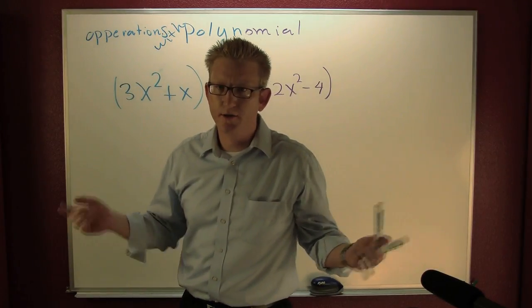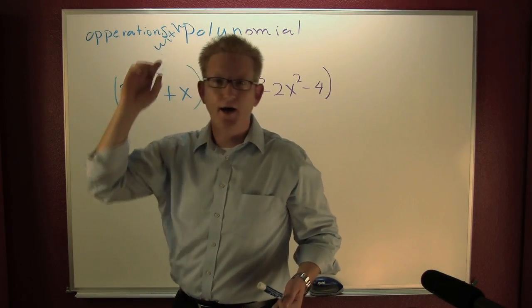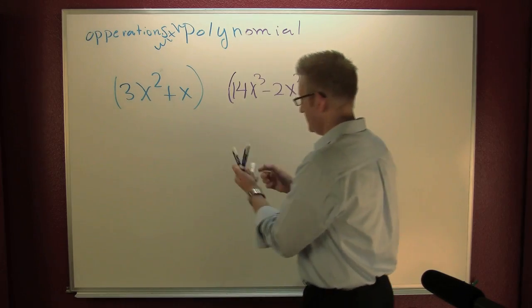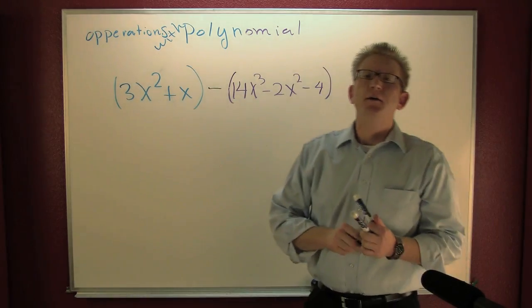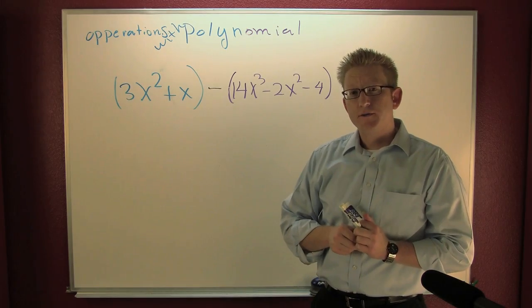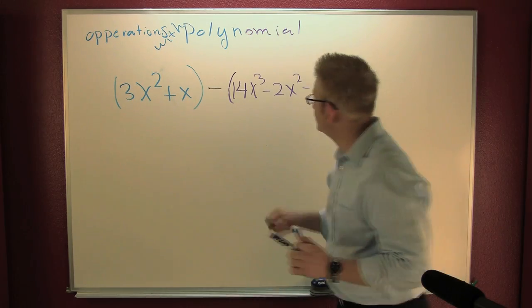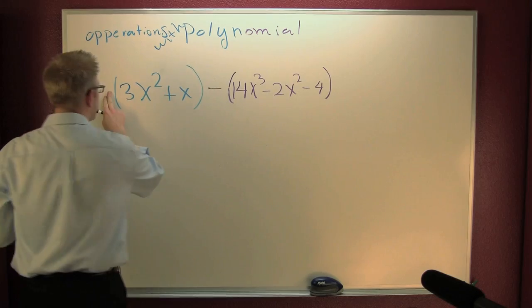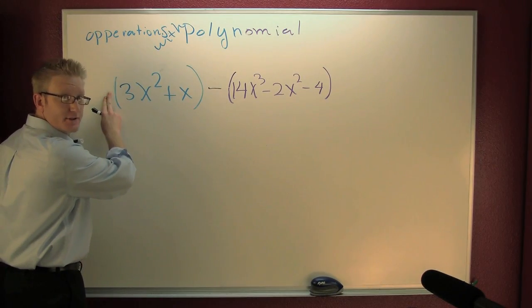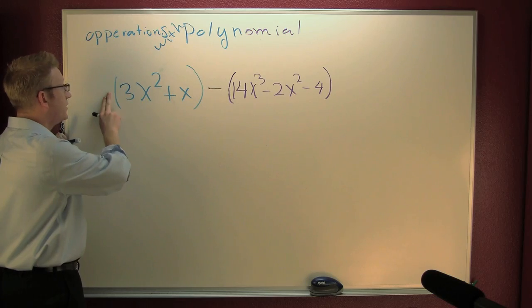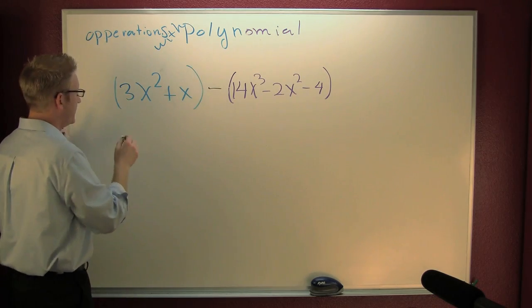So let's revisit our two polynomials. This time, however, I don't want to add them. I want to subtract. So we need to know, are those parentheses necessary? Is there a number or a minus sign out in front of this polynomial? No. So those are not necessary.